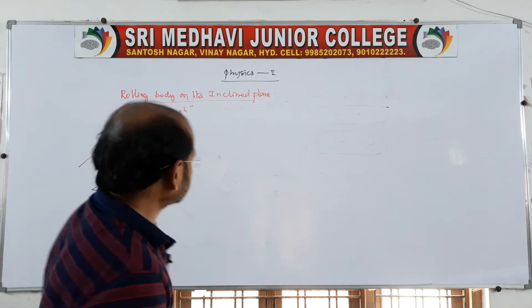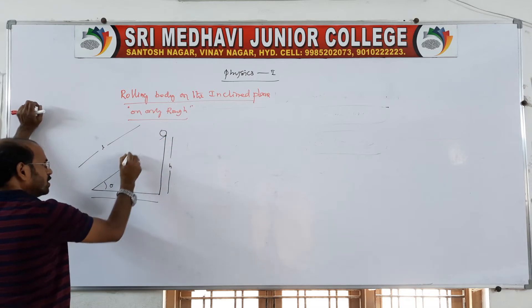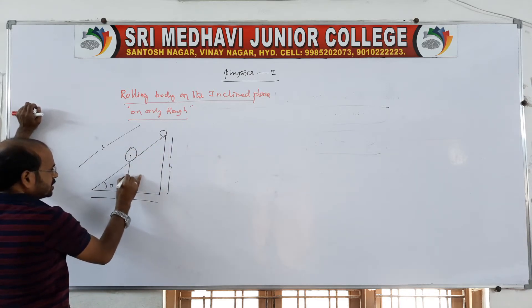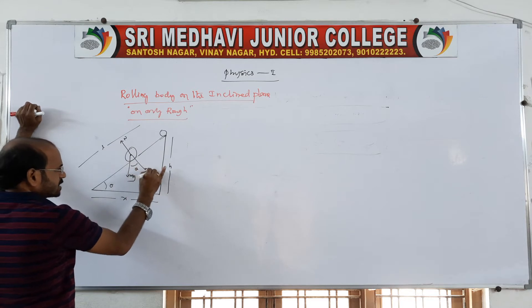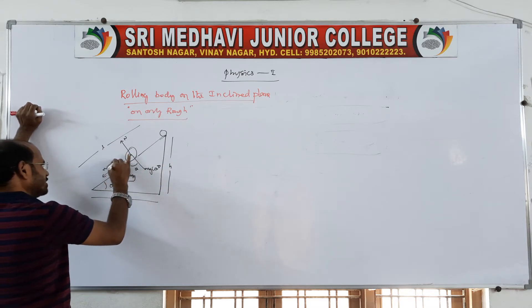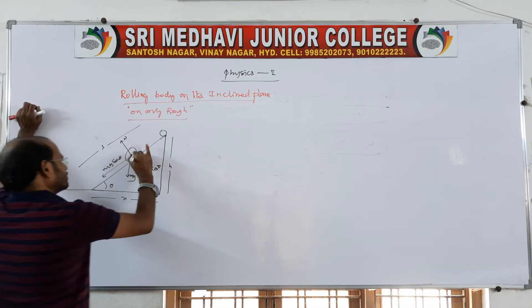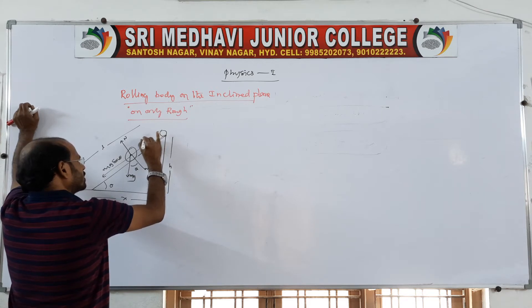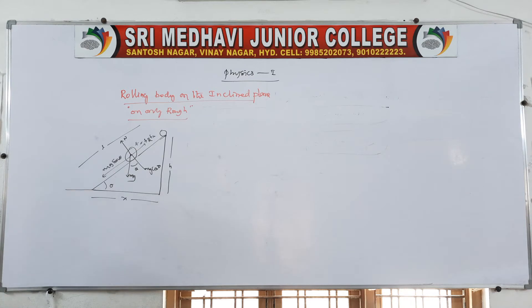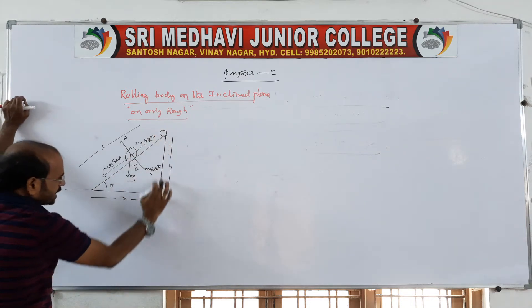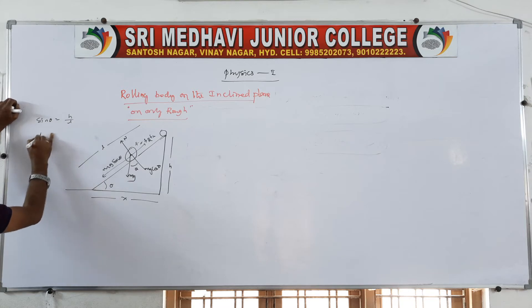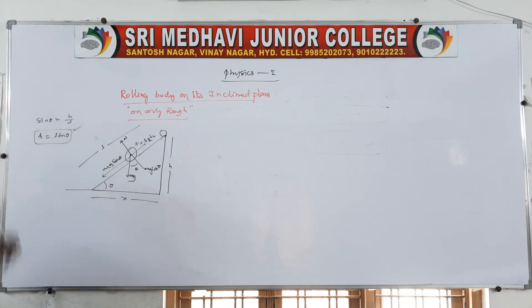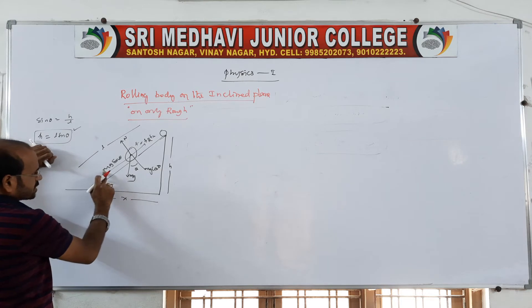The surface must be rough so that the body rolls. Consider an inclined plane with height h, length of plane L, making angle theta. The body rolls down. The weight mg acts downward, resolved into components mg cos theta and mg sin theta. There is a frictional force acting opposite to the motion. From geometry, sin theta equals h by L, so h equals L sin theta.